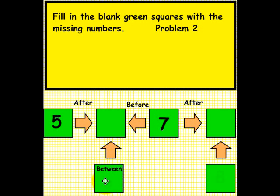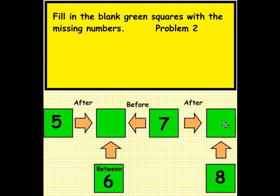The number you should have written is the number 6. 5, 6, 7 — 6 is between 5 and 7. What number comes after 7? The answer is 8. 7, 8. Please pick up an eraser and erase your answers in this square and in this one. Outstanding job! Please have another student come up to the smart board. Thank you.